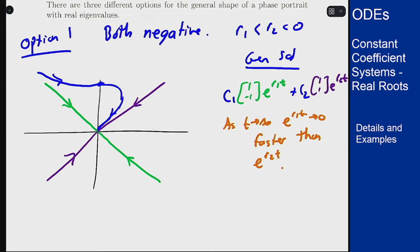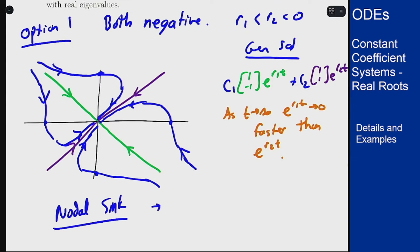You can fill in the other graphs as well to get your phase portrait like this and this is called a nodal sink like we saw in the previous example. This is when both eigenvalues are negative.